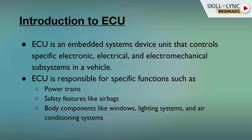An ECU is an embedded system device unit that controls specific electronic, electrical, and electromechanical systems in a vehicle. It is responsible for powertrain, safety features like airbags, and body components like windows, lighting, and air conditioning. Each system in a car — airbag system, lighting system, dual sensor system, parking sensor systems — is controlled by a different ECU. So basically each ECU represents a different unit for controlling different features.